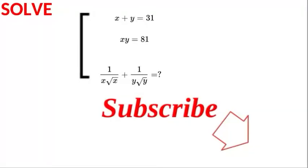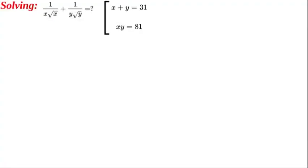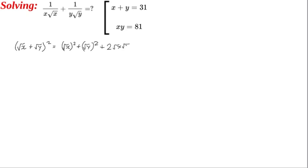Let's get started by introducing the radicals in a square. We can write the square root of x plus the square root of y, all squared, as equal to the square root of x squared plus the square root of y squared plus twice the cross multipliers, so we'd have 2 times √x times √y.